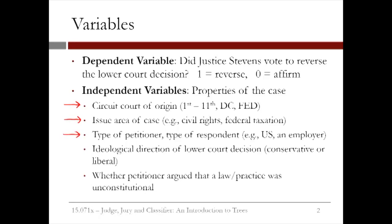The type of petitioner and type of respondent define two parties in the case. Some examples are the United States, an employer, or an employee. The ideological direction of the lower court decision describes whether the lower court made what was considered a liberal or a conservative decision. The last variable indicates whether or not the petitioner argued that a law or practice was unconstitutional. To collect this data, Martin and his colleagues read through all of the cases and coded the information. Some of it, like the circuit court, is straightforward, but other information required a judgment call, like the ideological direction of the lower court.